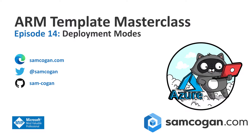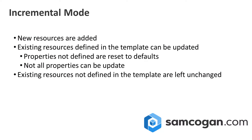There are only two modes we need to worry about, which are called incremental and complete. The incremental deployment mode is the default, and it's what we've been using for the last 13 episodes whenever we run a deployment and we don't specify a deployment mode. Incremental mode is probably the safest mode available.